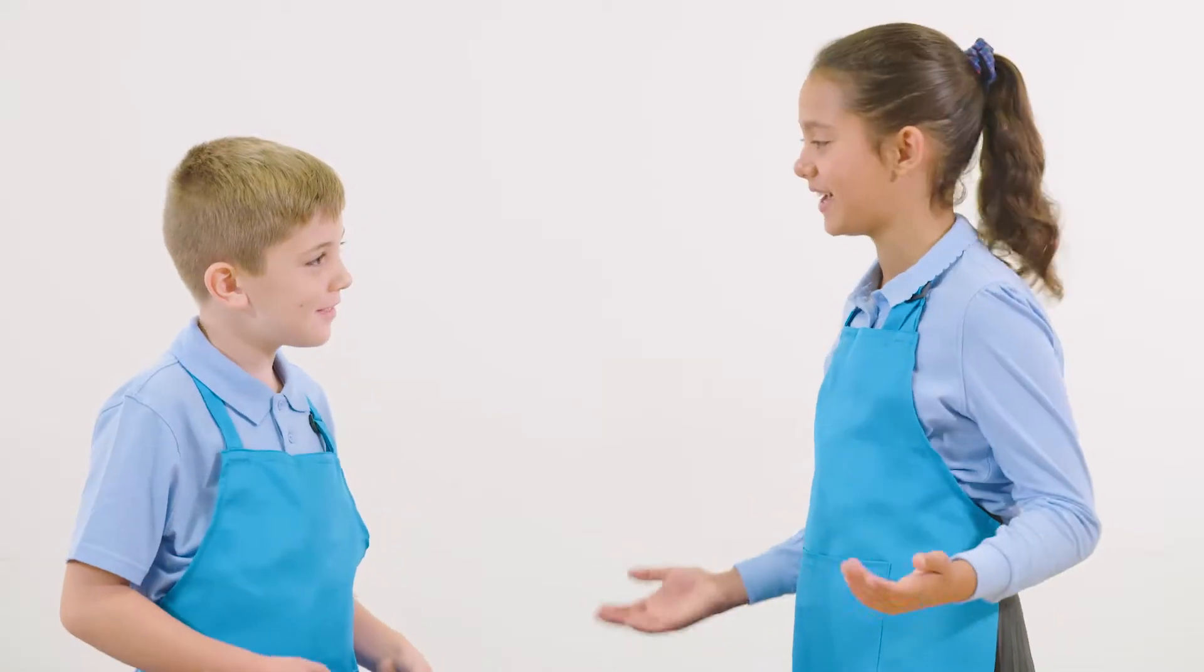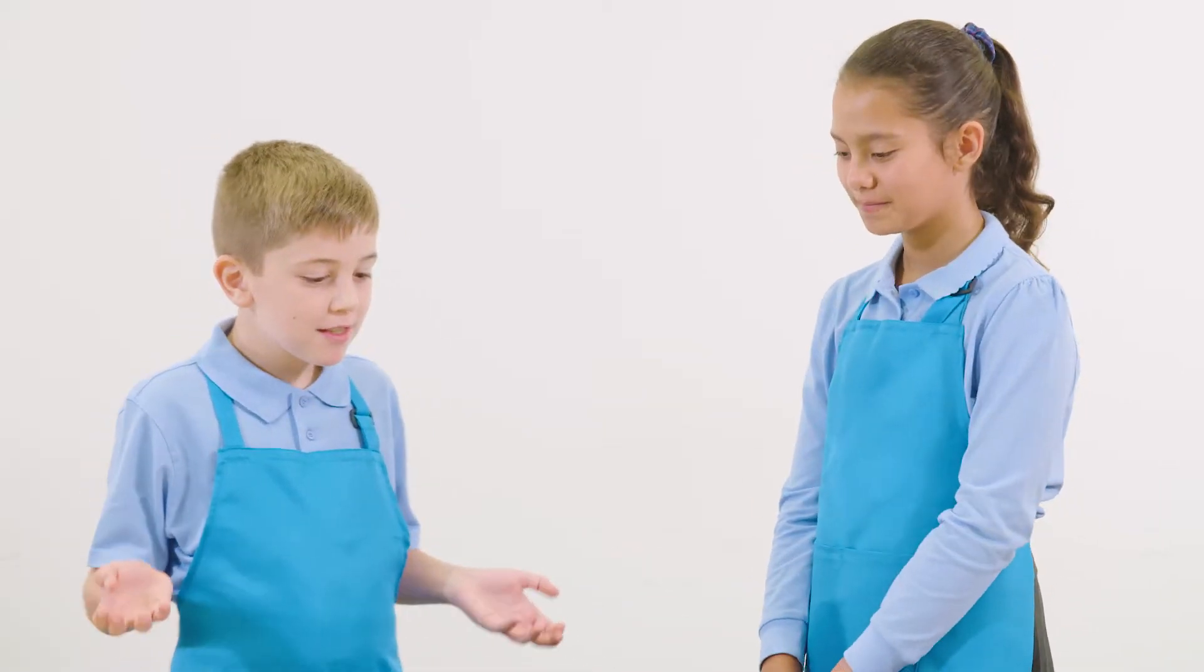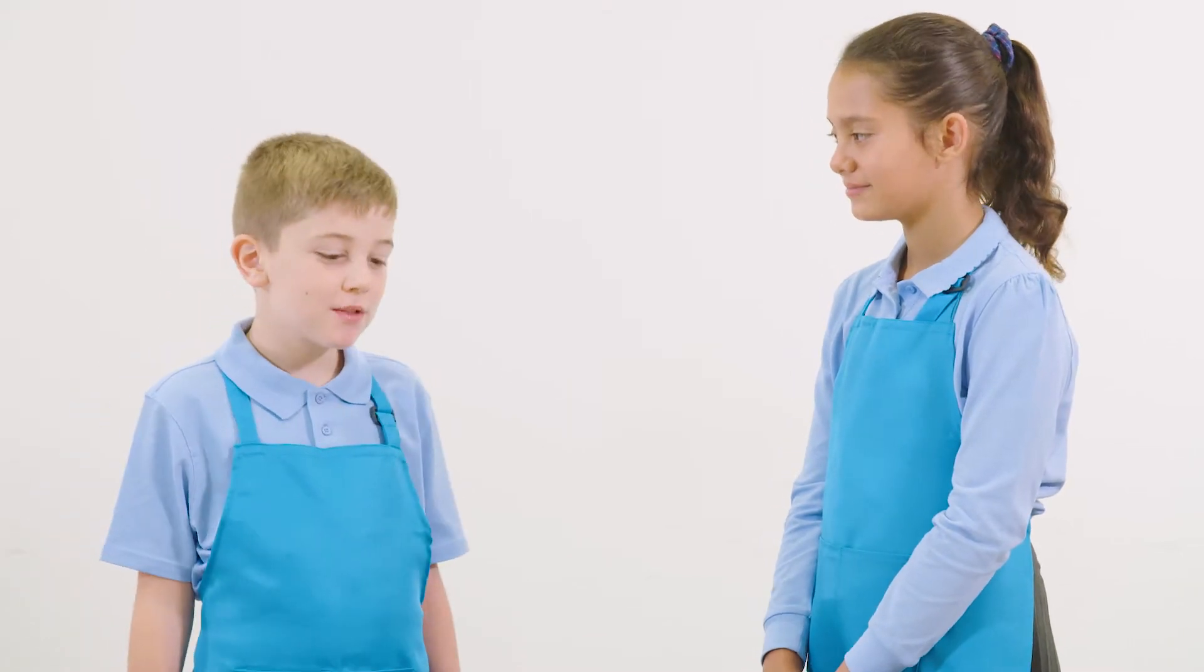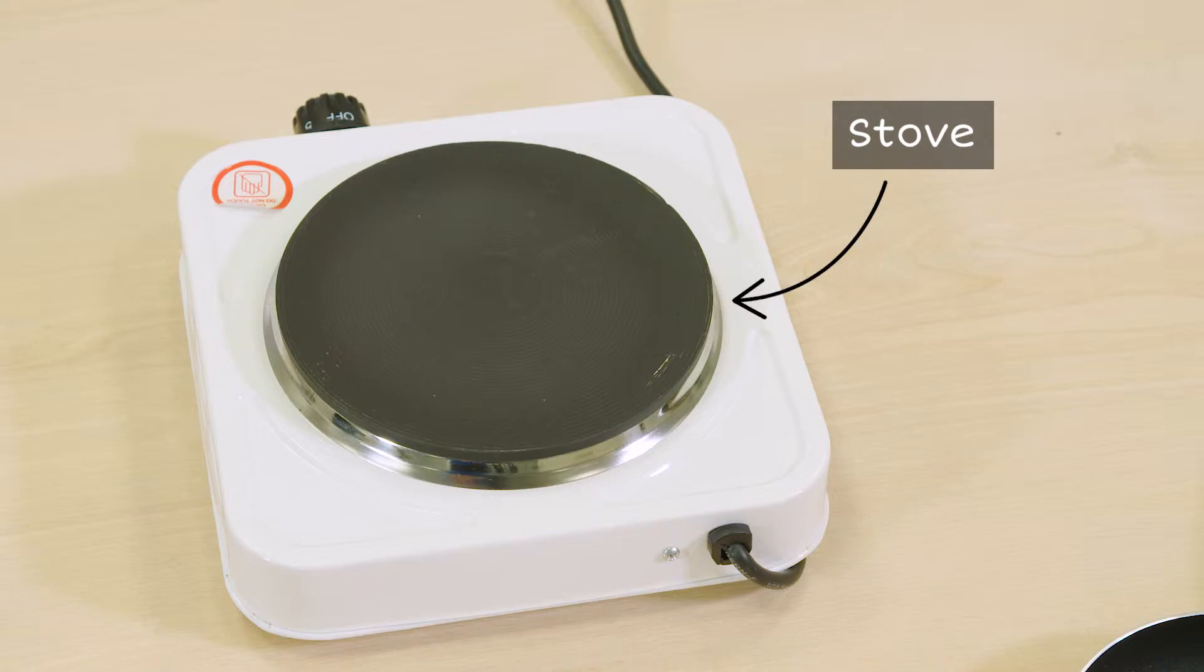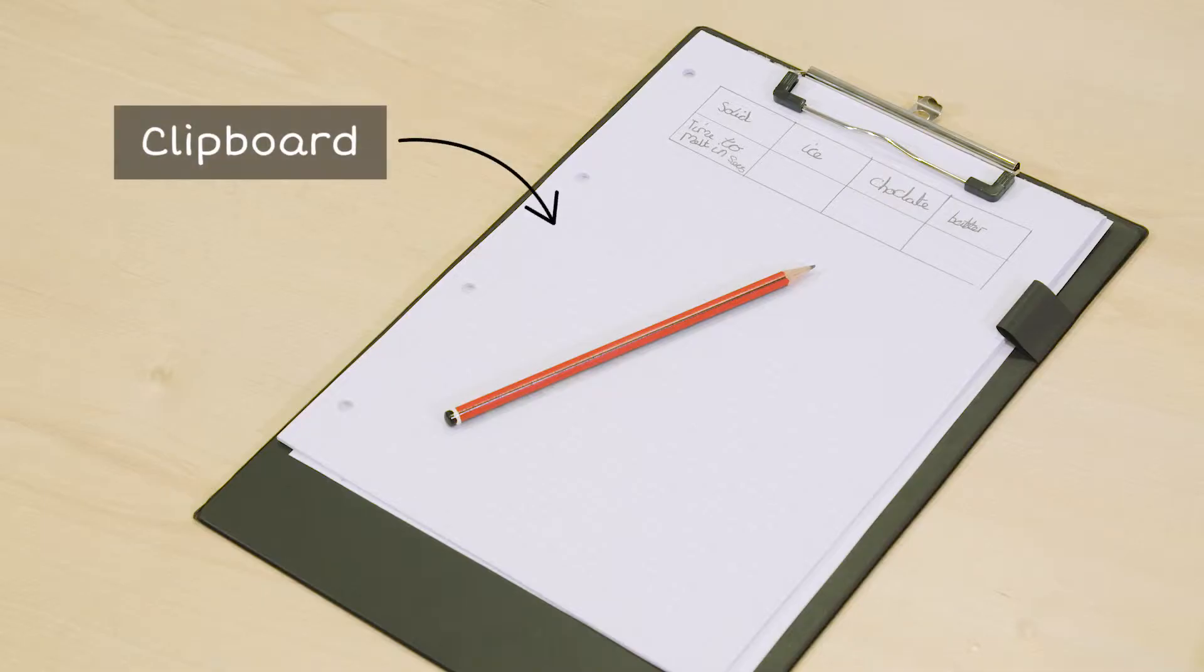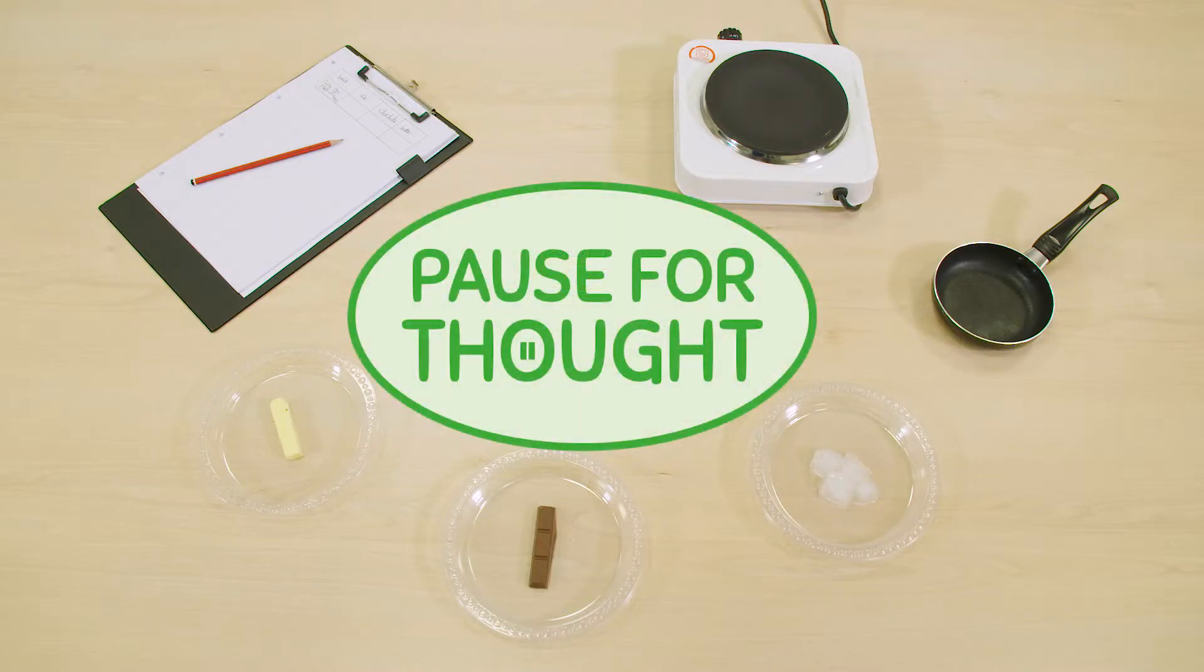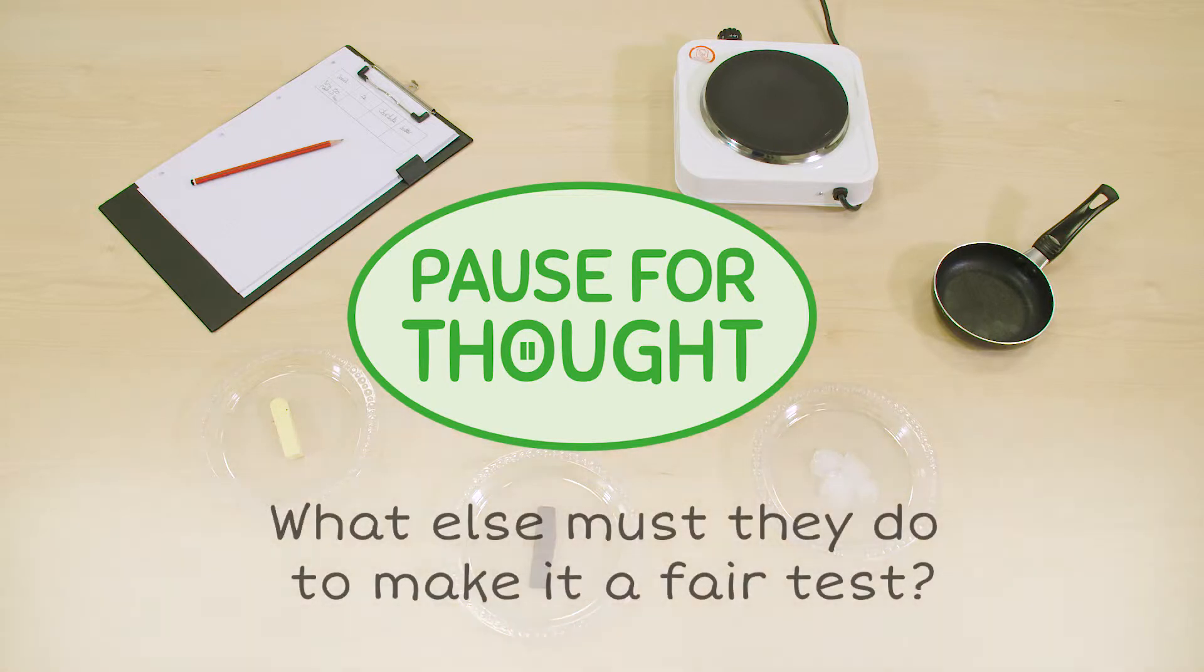We have to plan a fair test. Yes, we must use the same things to heat up the solids. They are going to heat each solid and measure the time it takes to melt. What else must they do to make it a fair test?